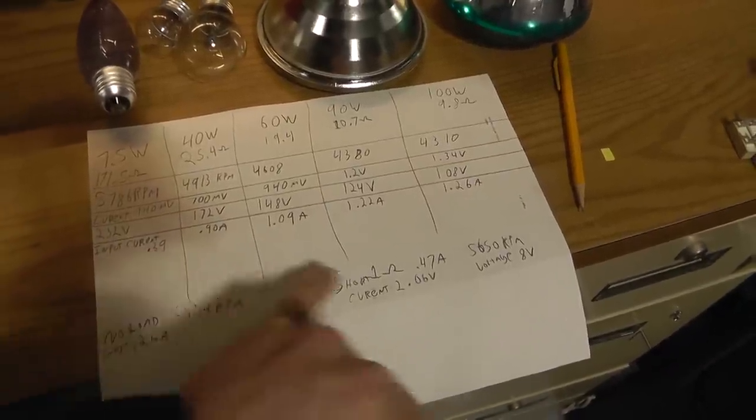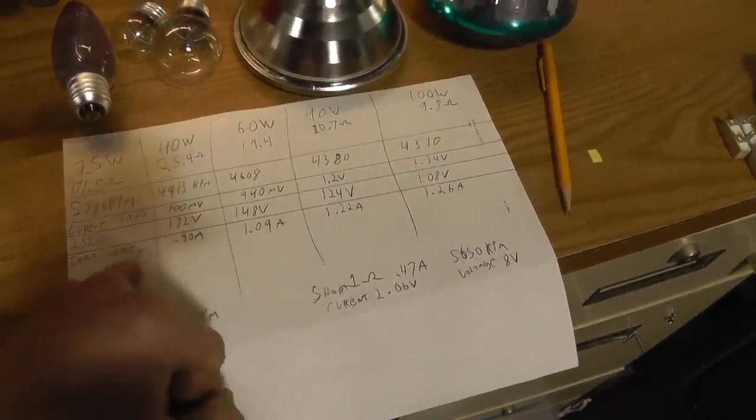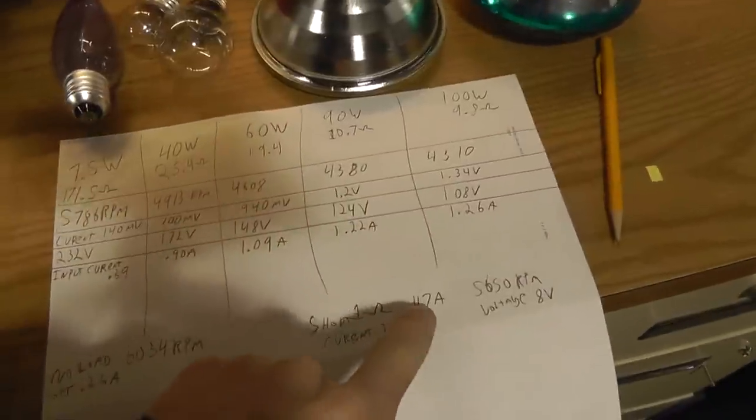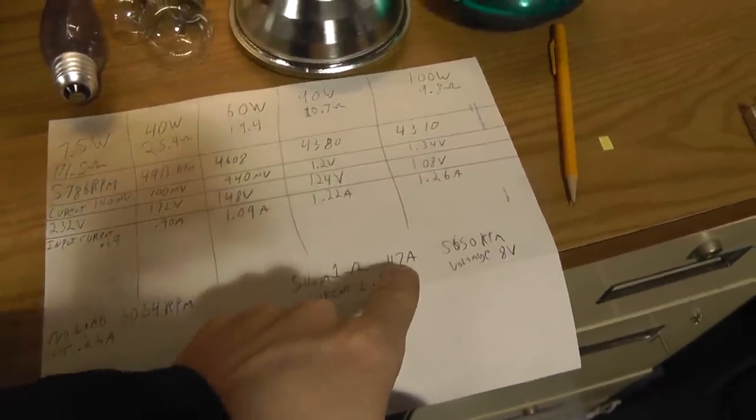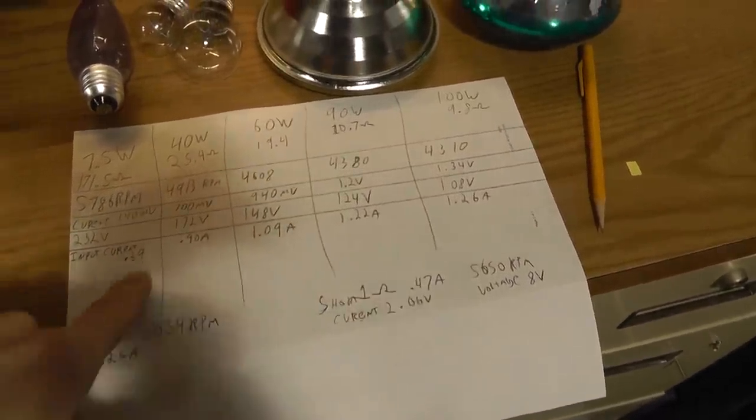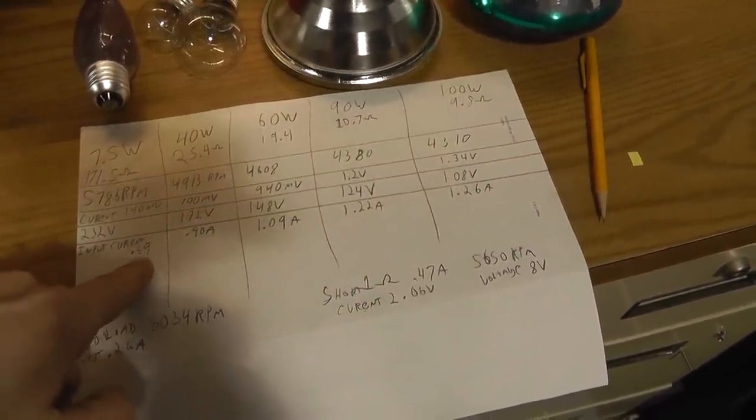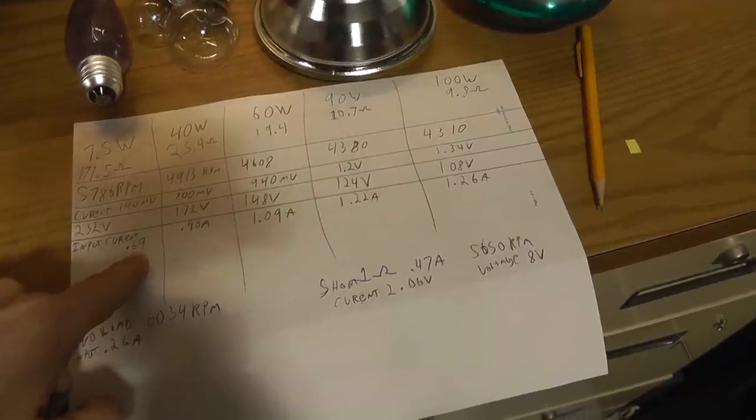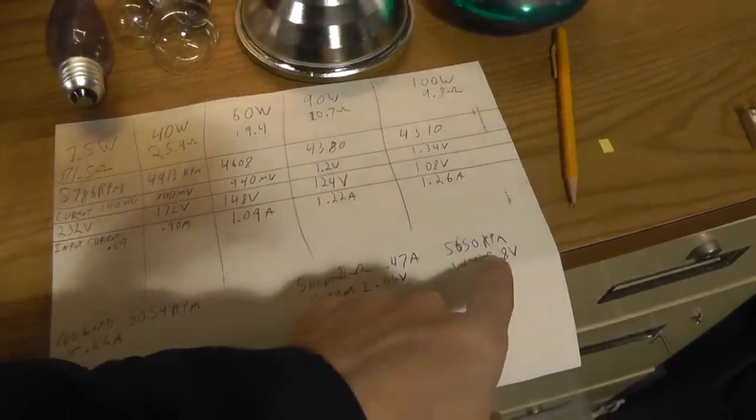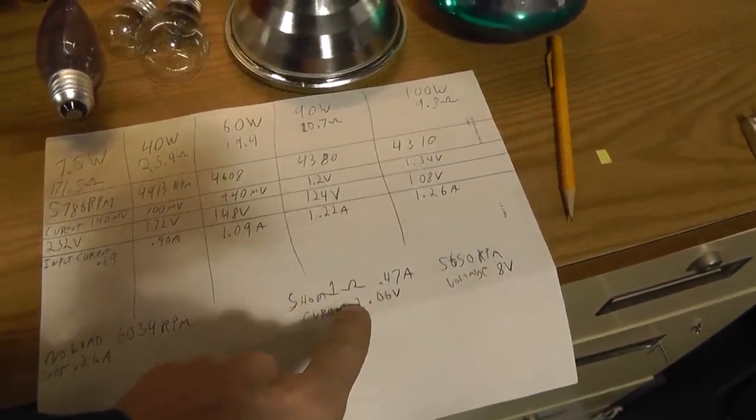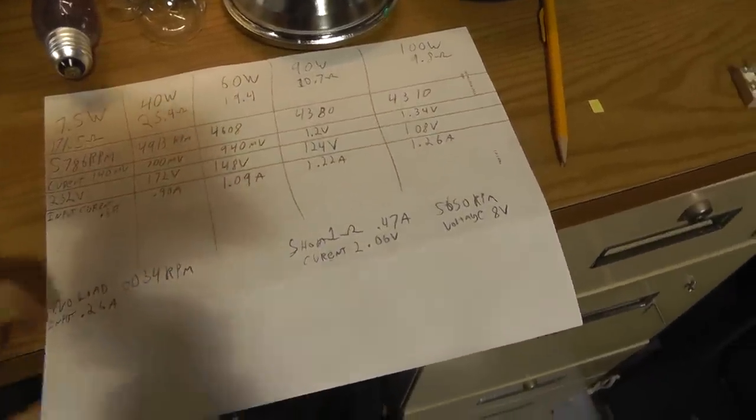At a dead short, you basically have maximum current, minimum voltage. And the input current is about .47 amps on the little motor. So a dead short is slightly more amperage. So at a dead short we got .47 of an amp on the input. With a tiny load we have a tiny bit less input, but then again we have no voltage at maximum current across the 1 ohm resistor.